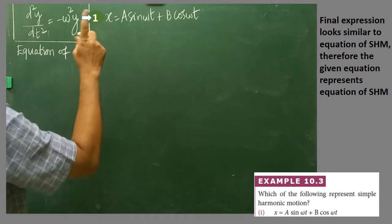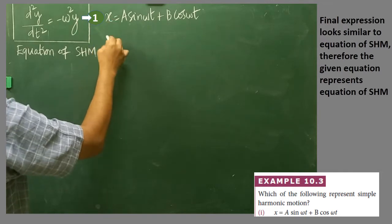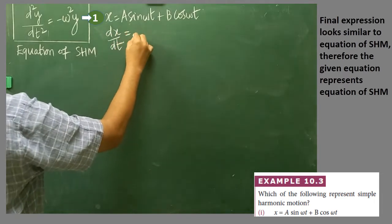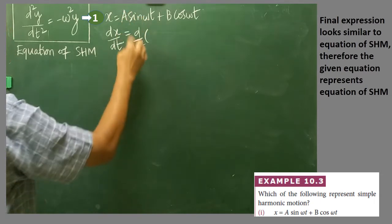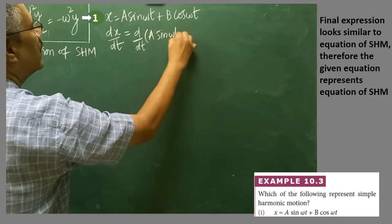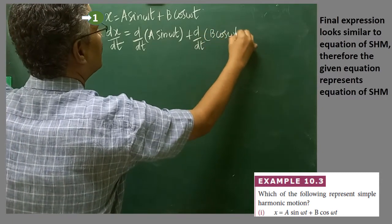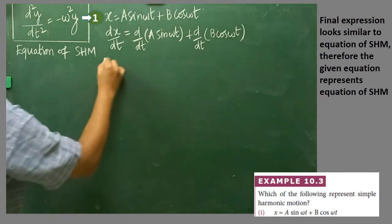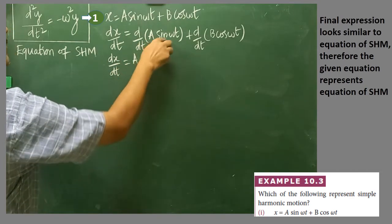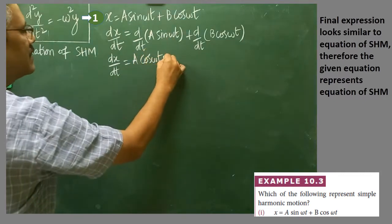Now I am going to differentiate x for the first time with respect to time. dx/dt is written as d/dt of (a sin(ωt)) plus d/dt of (b cos(ωt)). They have to be differentiated separately. Here a is a constant. If sin(ωt) is differentiated you get cos(ωt), and then ωt differentiated separately gives ω.